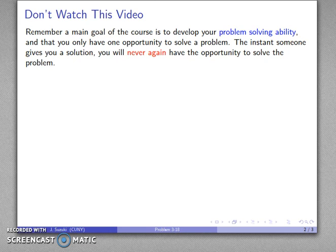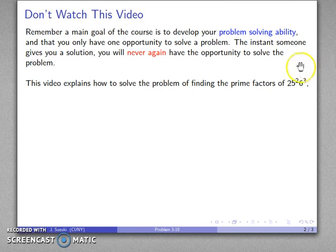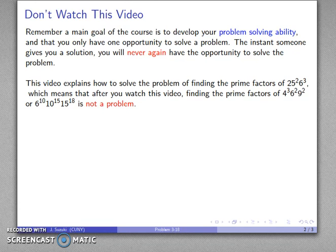And this doesn't just mean the problem that you are facing, but in fact, every possible variation of that problem as well. So, for example, here we have the problem of finding the prime factorization of this number 25 to the second 6 to the third. But as soon as you solve that problem, as soon as you see me solve that problem, then finding the prime factors of this or anything else is not a problem. It's a task to be solved, and you won't have a problem-solving opportunity.